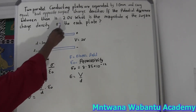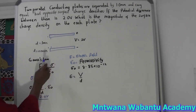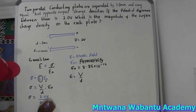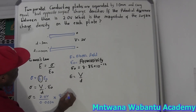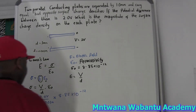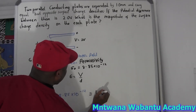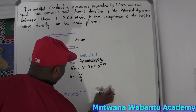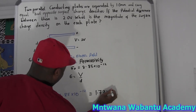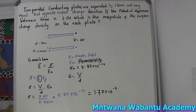Our potential difference is 2.0 volts. The separation — we have to use the actual unit in meters — is 0.001 meters. Times the permittivity, which is 8.85 times 10 to the power of negative 12. If you apply that on a calculator, this gives you 1.77 times 10 to the power of negative 8.